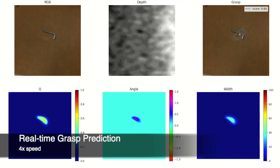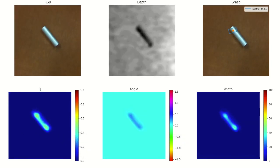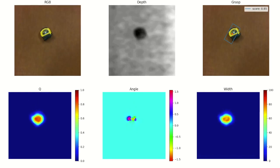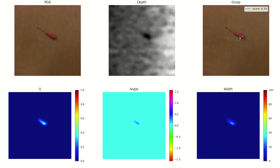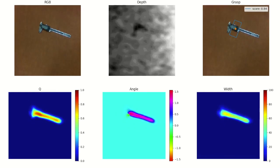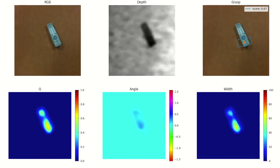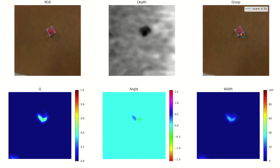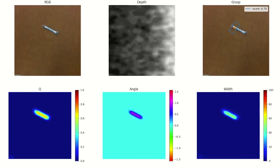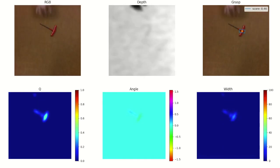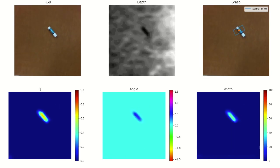We demonstrate that GRCOND NET generates robust antipodal grasps from RGBD images at real-time speeds.